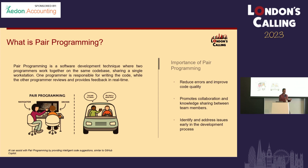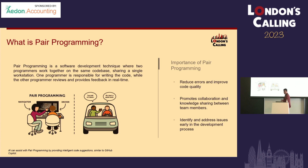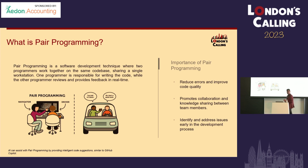There are three things that make pair programming important. First, it reduces errors and improves code quality by providing a second set of eyes while you're coding. Secondly, it promotes collaboration and knowledge sharing — if you're sitting with your architect, senior developer, or tech lead, they can share knowledge about your coding style. And it helps identify and address issues early in the development process, which saves time in the longer run.